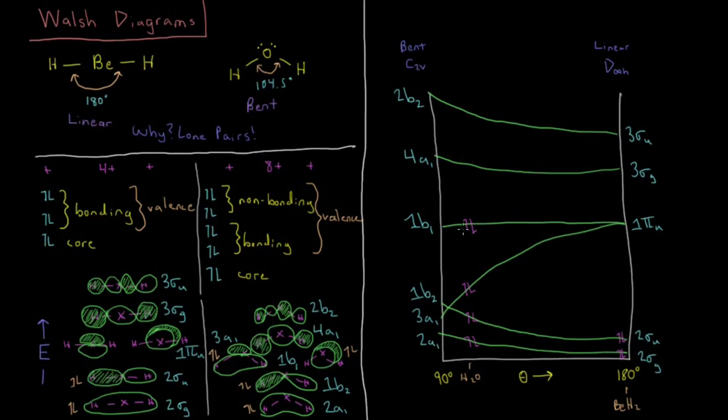So one of them still stays completely non-bonding as a lone pair, so it doesn't care. The 1b1 or 1πu, it doesn't care what the geometry is, what the angle is. But these other three, the equilibrium bond angle will occur wherever you get the minimum energy for the whole molecule versus this curve.